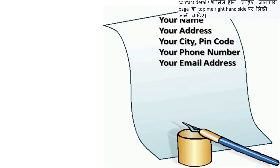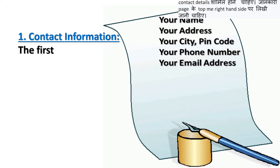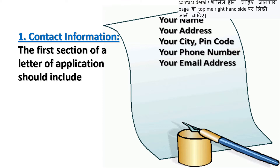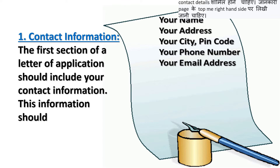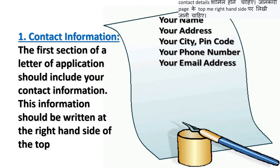Now we will look at the format of job application letter. The first thing that comes in the job application letter is the contact information. The first section of a letter of application should include your contact information. This information should be written at the right hand side of the top of the page.